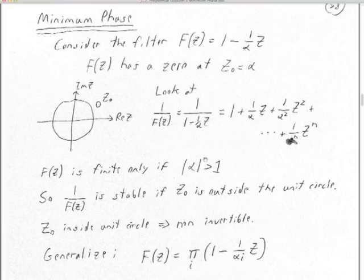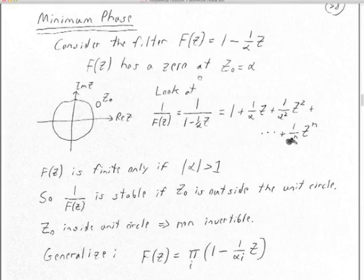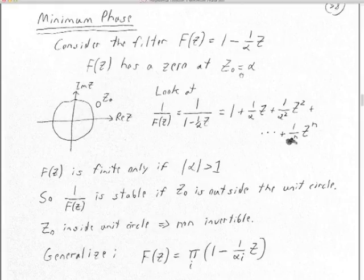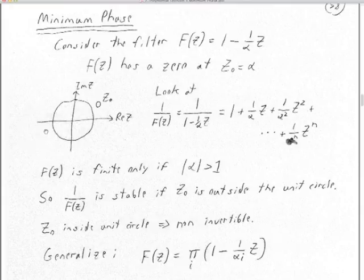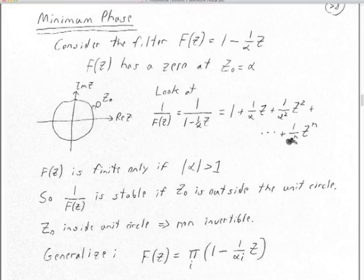Let's consider this filter: 1 minus 1 over alpha times z. Alpha can be complex. The polynomial f of z has a zero, where the polynomial evaluates to zero, at z₀ equal to alpha, the complex number. Let's look at inverting this filter. Here on the left, I'm describing the filter as having a zero z₀ which is outside the unit circle, at roughly one-quarter pi — so one-quarter of the Nyquist frequency would be its omega₀.